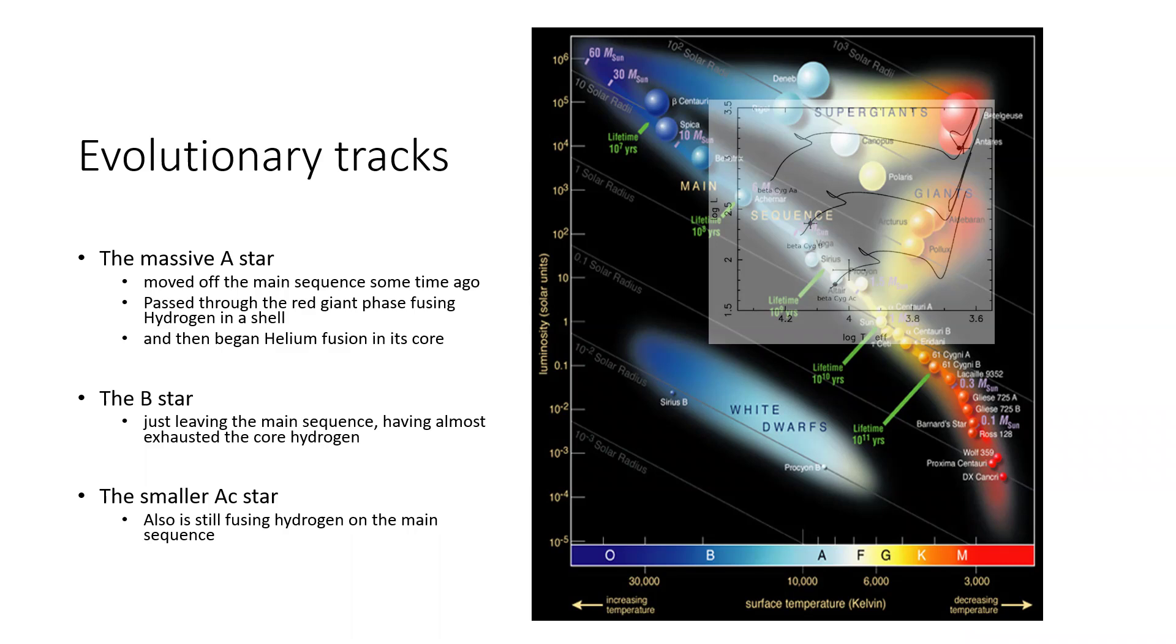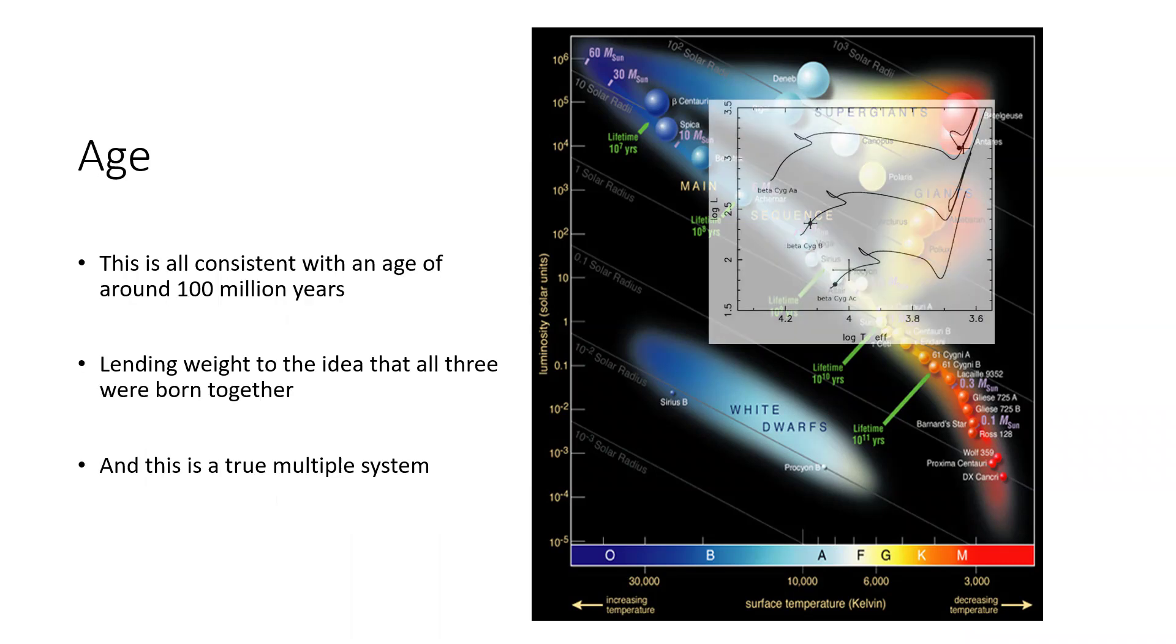The B star, the middle squiggly line, is just beginning to evolve off the main sequence, hasn't really headed off over up to the top right into the giant branch at all. And the AC star at just two and a bit solar masses, that's still firmly on the main sequence, turning hydrogen to helium in its core. If we look at the consequences of that, it means it's consistent with all three of them having an age of about 100 million years.